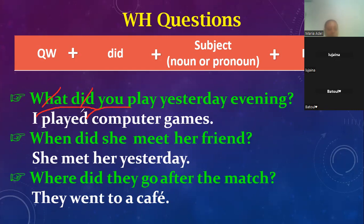Because we removed the auxiliary verb 'did', we put the verb back in the past form. So: 'I played computer games.' Next: 'When did she meet her friend?' We remove 'when' and 'did', so she — the verb goes in the past form. 'Meet' turns to 'met'. She met her yesterday.